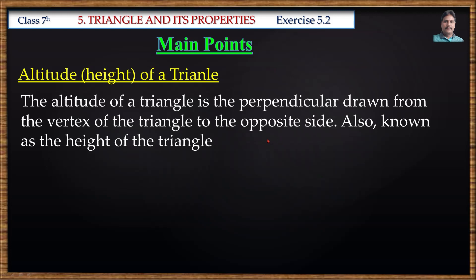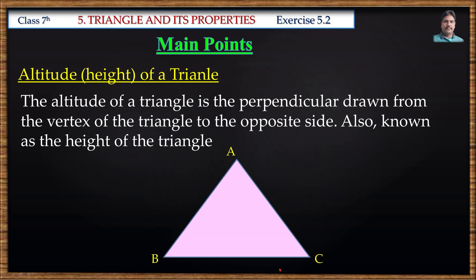If we take triangle ABC and draw a perpendicular from vertex A to the opposite side BC, then this perpendicular distance is called the altitude. We can also measure the altitude from vertex B to its opposite side AC. We can also measure from vertex C to its opposite side AB — that perpendicular distance is also an altitude of this triangle.